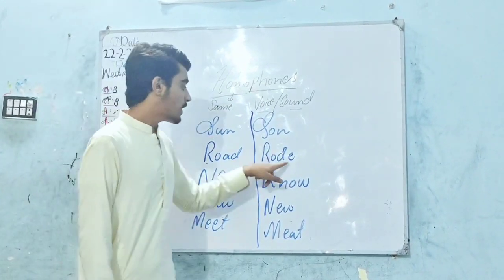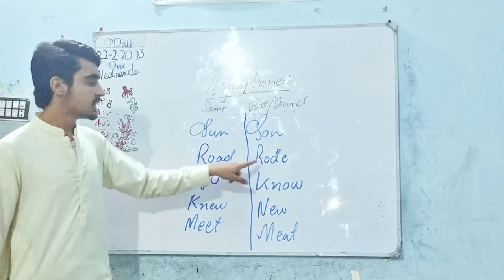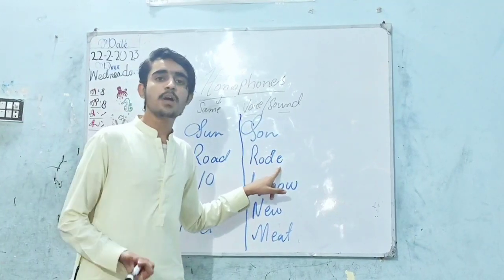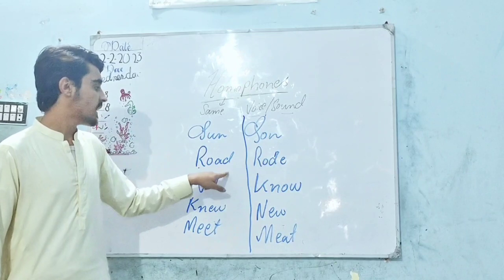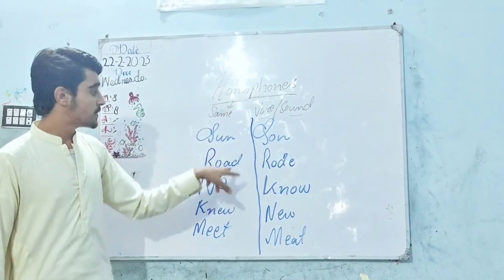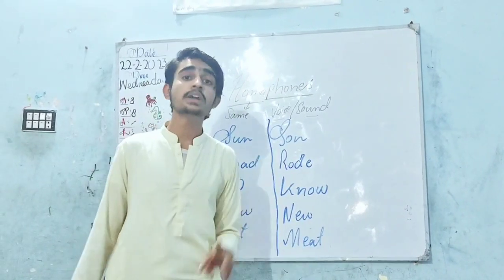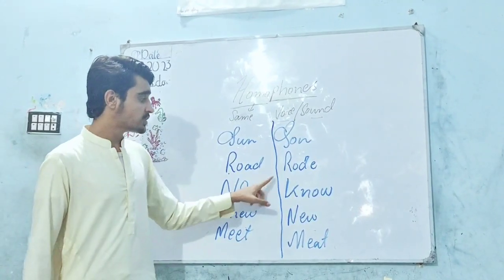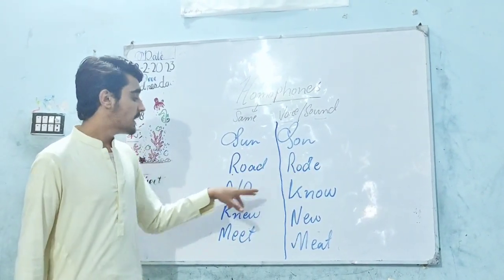Like this: road and rode. This road means sada (a path/road), and this rode is the second form of ride — it means chalana (to ride). They are called homophones because they sound the same — road, rode — but the spellings are different and the meanings are different.